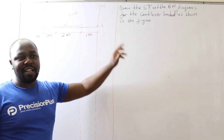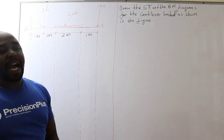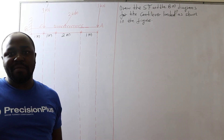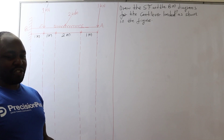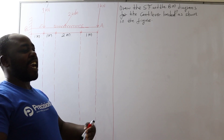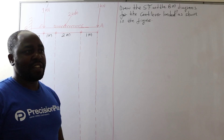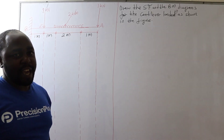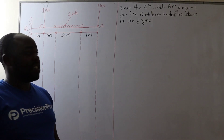An example of a cantilever is like a balcony. Remember a balcony is usually fixed on the wall but on the other end it is not supported — it is overhanging on the other end.